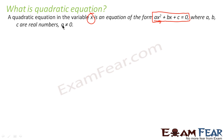Let me repeat: a quadratic equation in the variable x is an equation of the form ax² + bx + c = 0, where a, b, c are real numbers and a should not be equal to zero. Because if a is equal to zero, that component is gone and the equation becomes bx + c, where the highest power is one — so it is no longer a quadratic equation, it is a linear equation.